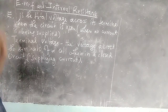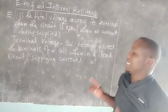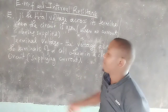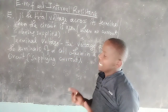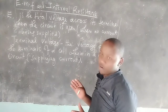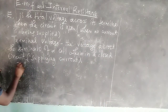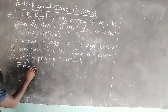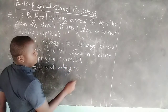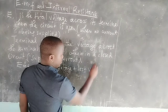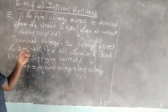When a cell is supplying current, its voltage drops from the EMF down to a value we call terminal voltage. Therefore there is a difference between EMF and terminal voltage, and that difference we call the lost voltage. So EMF is the same as terminal voltage plus the lost voltage.